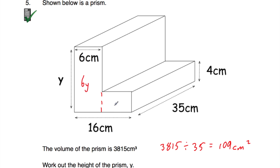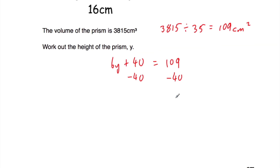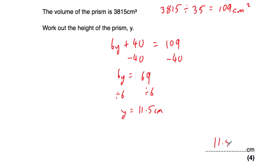For this other rectangle, the whole width is 16 centimetres and this part is 6, so this part must be 10 centimetres. The height is 4, so 10 times 4 is equal to 40 centimetres squared. That means 6y plus 40 must equal 109. So we write: 6y + 40 = 109. Subtracting 40 from both sides gives 6y = 69. Dividing both sides by 6, y is equal to 11.5. So the height of this prism, y, is 11.5 centimetres.